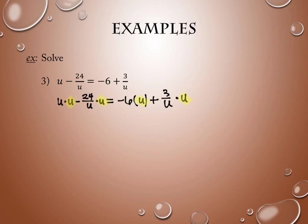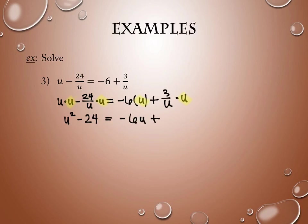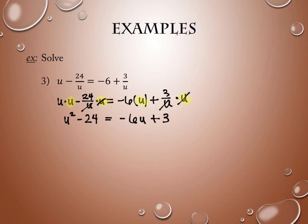On the left I'll have U squared and then negative 24. On the right I have negative 6U and 3. The U's in the denominator cancel with the U I'm multiplying by — that's the whole goal at that stage. Here's why this problem is harder than the last: I don't have a linear equation at this point. There's a U squared — it's quadratic.